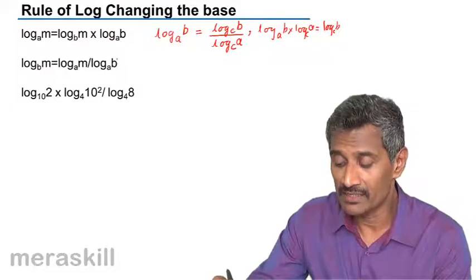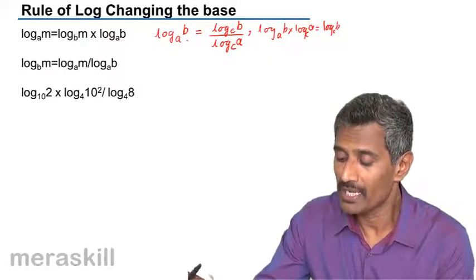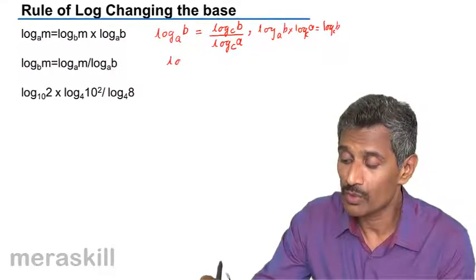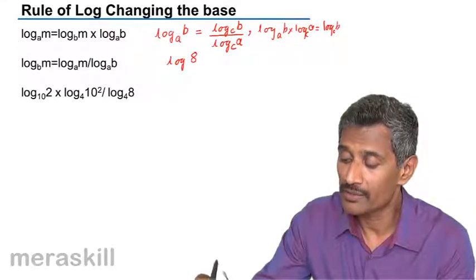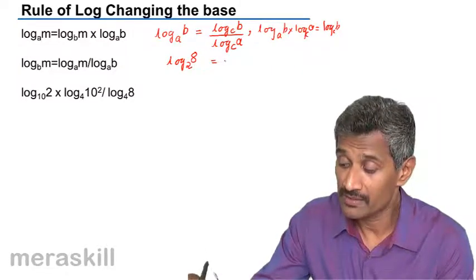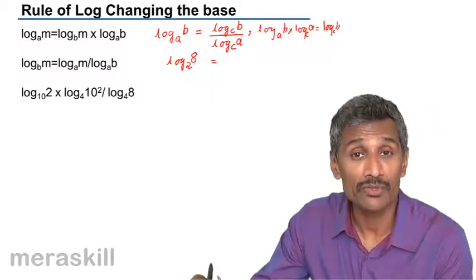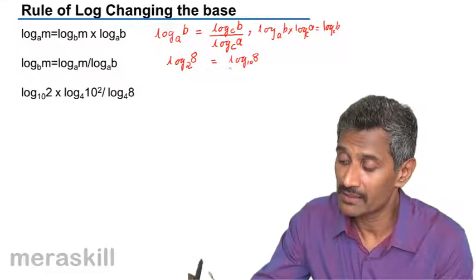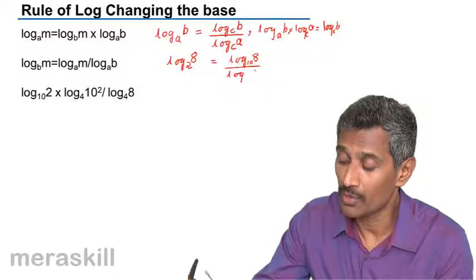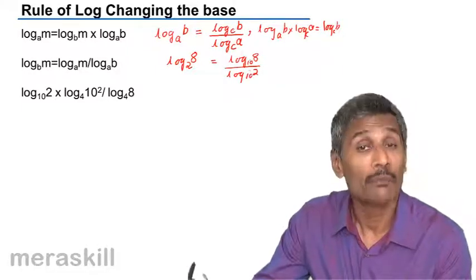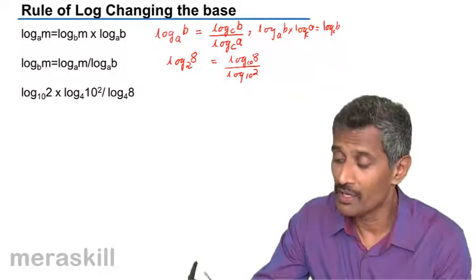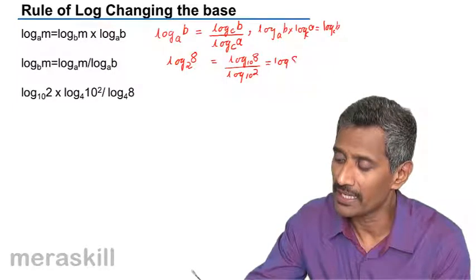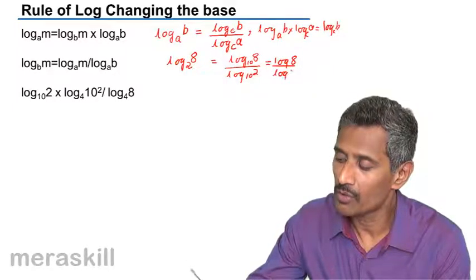Now all these are just based on this formula. For example, suppose I want log 8 to the base 2. We can write this as, suppose I want to change the base to 10, log of 8 to the base 10 divided by log of the old base to the new base. But as mentioned earlier, if the base is 10 we normally do not write the base. We can simplify this as log 8 upon log 2.